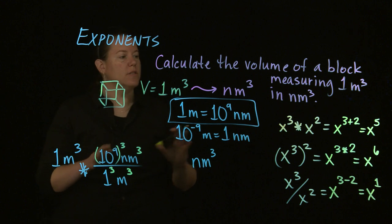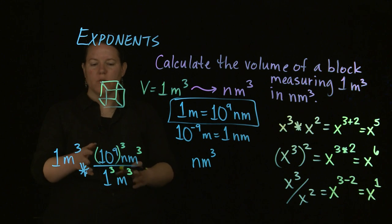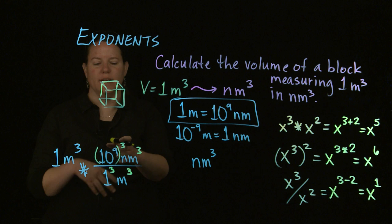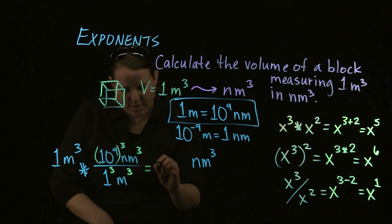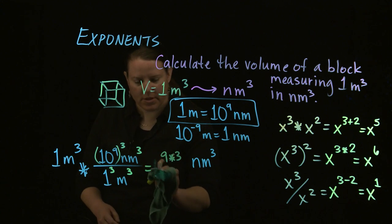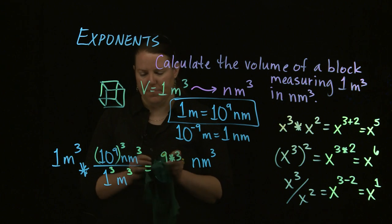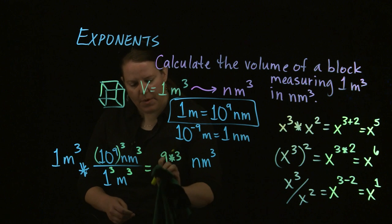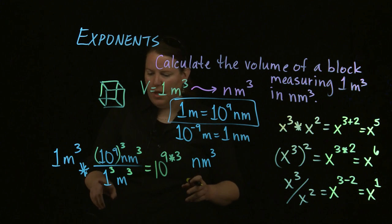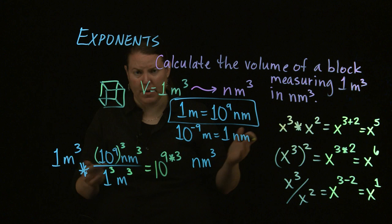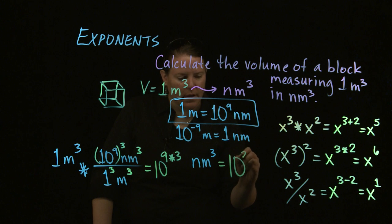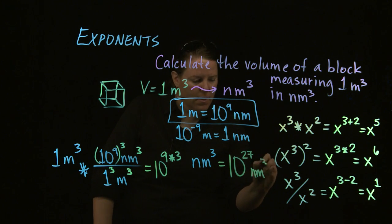When you divide exponents with the same base, you subtract: x cubed divided by x squared equals x to the three minus two, which is x to the first. So here I have ten to the ninth, and I'm cubing it, which is the same as ten to the ninth times the third. One times one times one is one, so I don't need to worry about that. Ten to the ninth to the third equals ten to the twenty-seventh nanometers cubed.